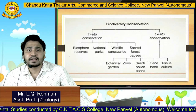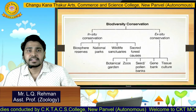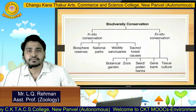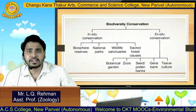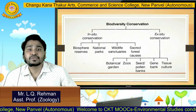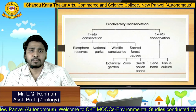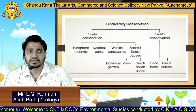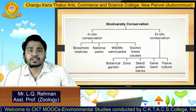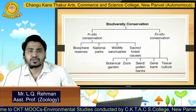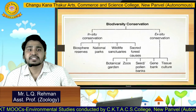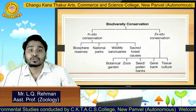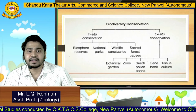In this flow chart or tree diagram, you can clearly see the in-situ conservation and ex-situ conservation. In-situ conservation includes biosphere reserves, national parks, wildlife sanctuaries, and sacred forests. In ex-situ conservation, we have tissue culture, gene bank, seed banks or pollen banks, zoological gardens or zoos, and botanical gardens.